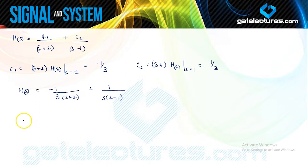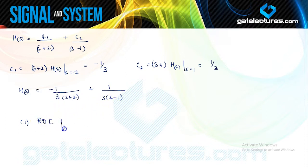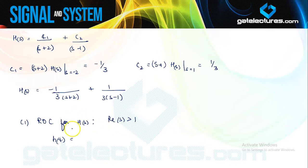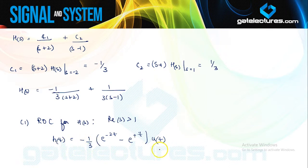In the first part, they need the system to be causal. This system has two poles at s = -2 and s = +1. For a causal system, h(t) must be a right-handed signal, so the ROC for H(s) must be Re(s) > 1 — to the right of the rightmost pole. Performing the inverse Laplace transform with this ROC gives h(t) = [(-1/3)e^(-2t) + (1/3)e^t] * u(t).